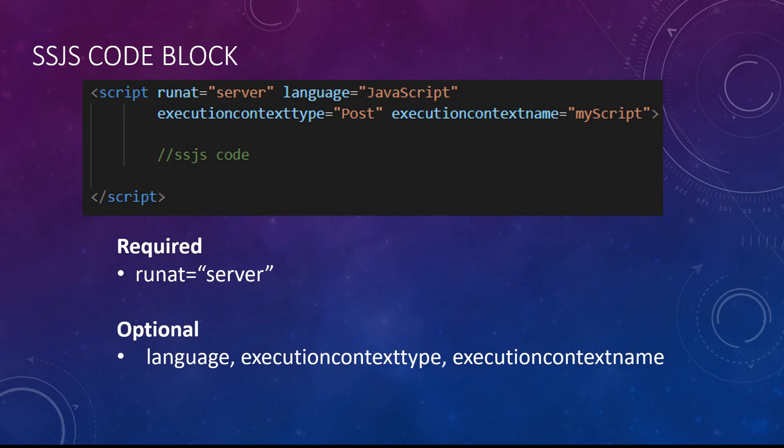Now let's see how we write SSJS code. We need the script tag as the code block. Those of you who have worked with JavaScript should already be familiar with the syntax. The only difference here is that you need to specify runat equal to server. Otherwise, it will default to client-side scripting. If you omit this runat parameter and just simply use the script tag, it will default to client-side scripting and not server-side.